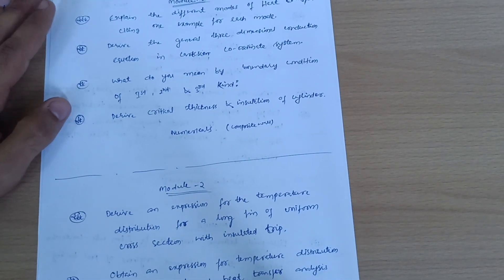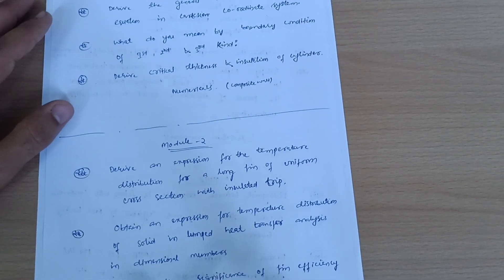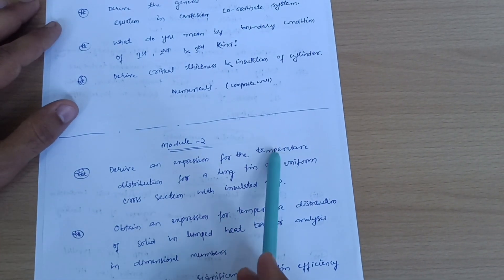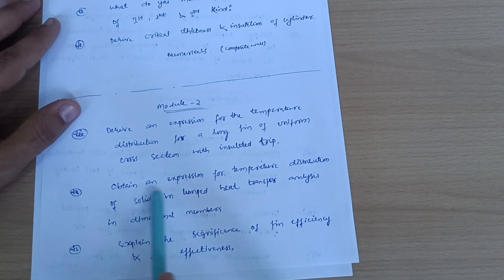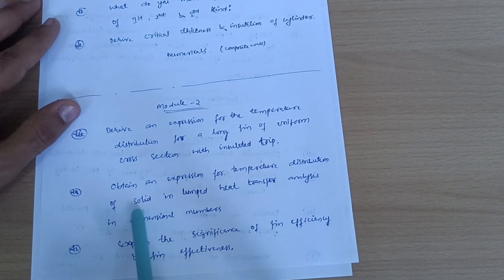Next is Module 2. Derive an expression for the temperature distribution for a long fin of uniform cross section with insulated tip. Obtain an expression for temperature distribution of a solid in lumped heat transfer analysis.